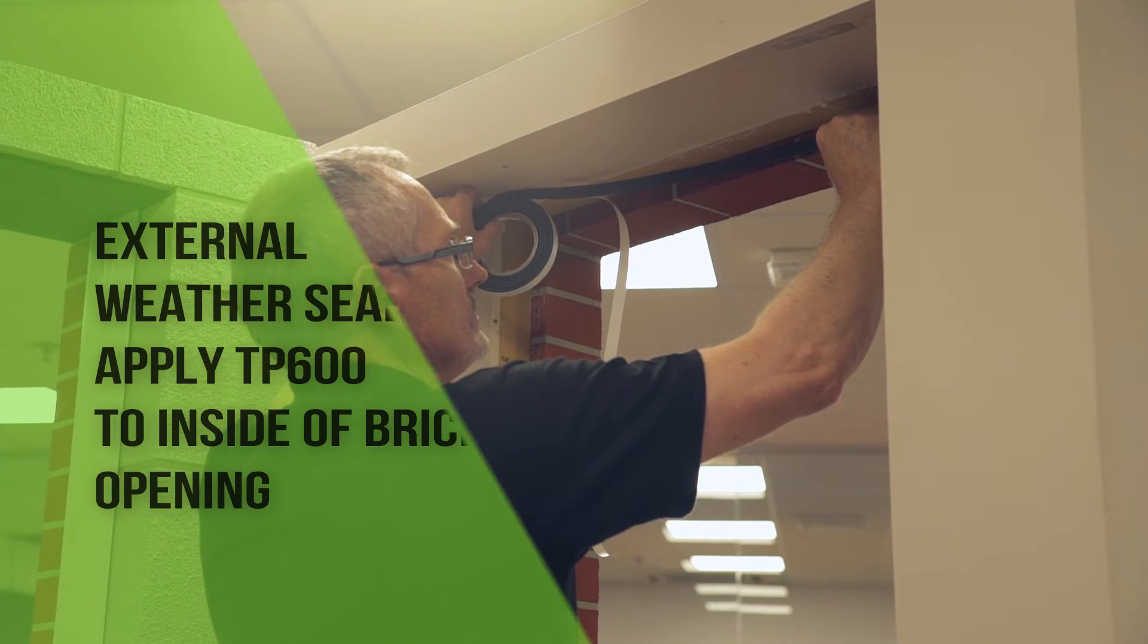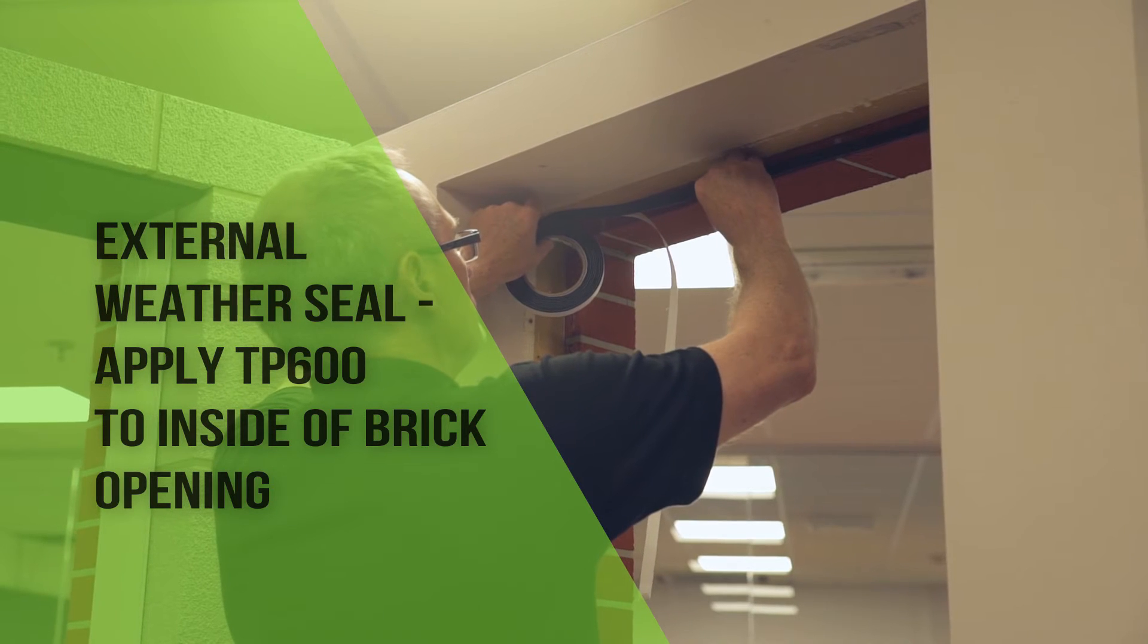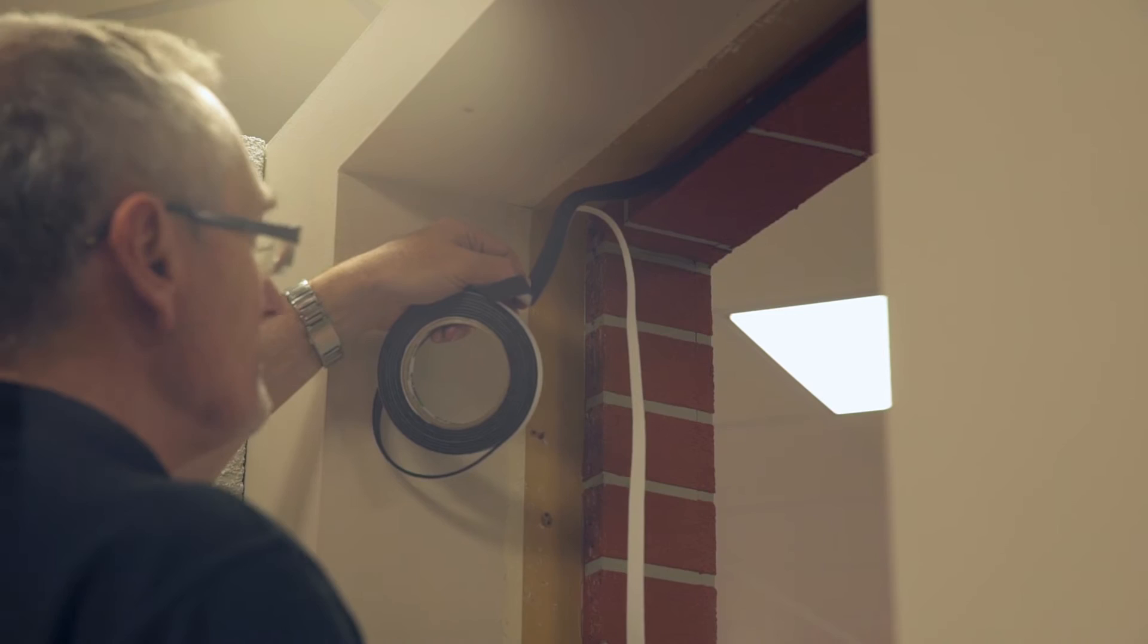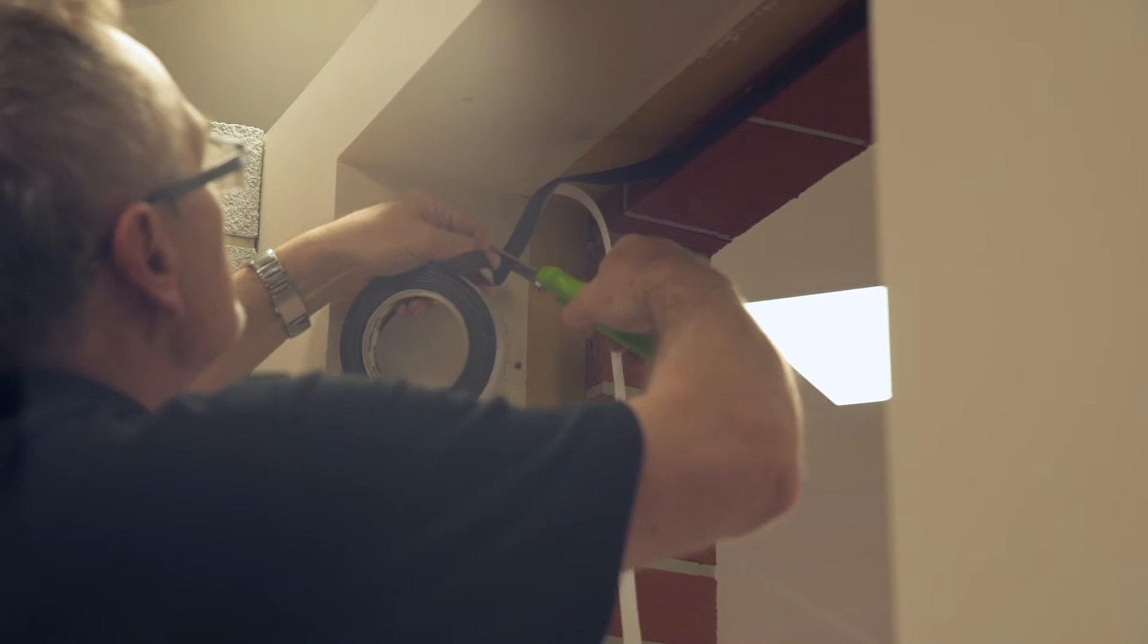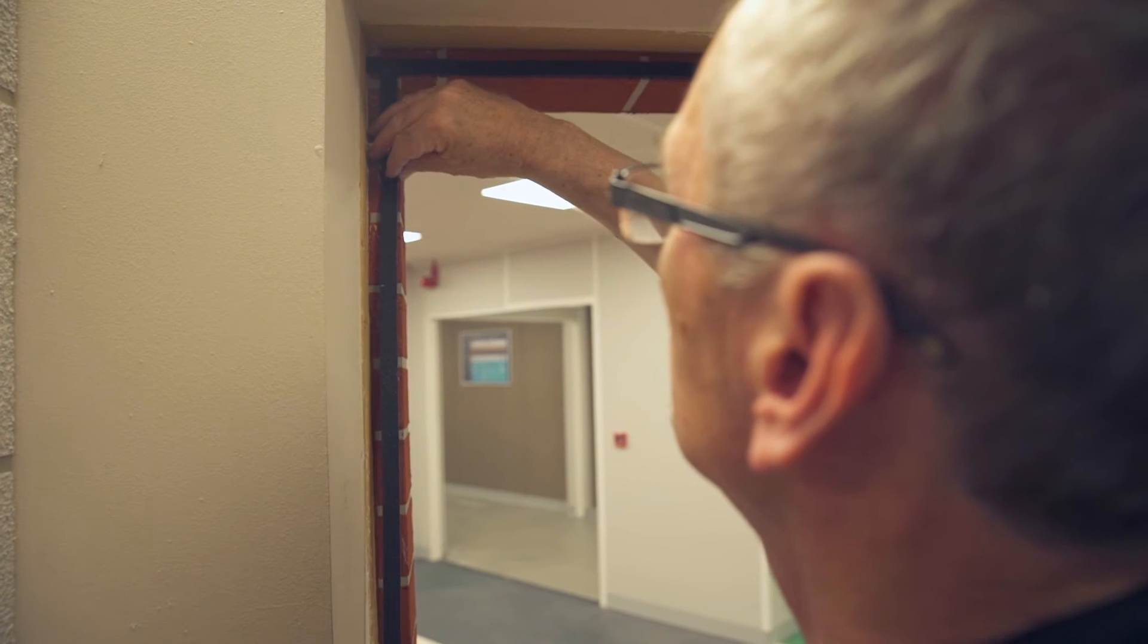The TP600 is now applied to the rear face of the external brick course. When using this method, it's important that the brick surface is smooth and level enough for the tape to temporarily adhere until the window is in place. Isolated damaged areas can be repaired with mortar.